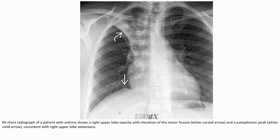Another chest radiograph of a patient with asthma shows right upper lobe opacity with elevation of the minor fissure and costophrenic angle changes, consistent with right upper lobe atelectasis.